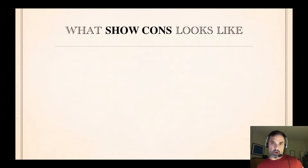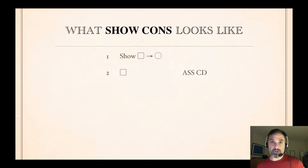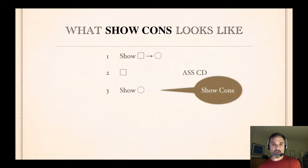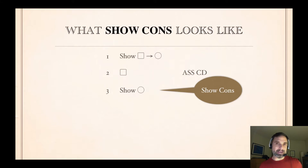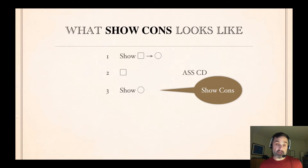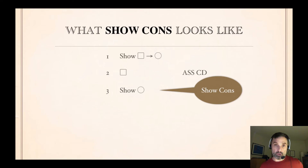We've already seen show consequence, but just to remind you: suppose that we're trying to show a conditional. The first thing we'll do is assume CD — we'll always make an assumption, and if it's a conditional we'll make a conditional assumption. Then the next thing we want to do is show the consequent. If you're trying to show a conditional you basically always want to do assume CD and then immediately show consequent.